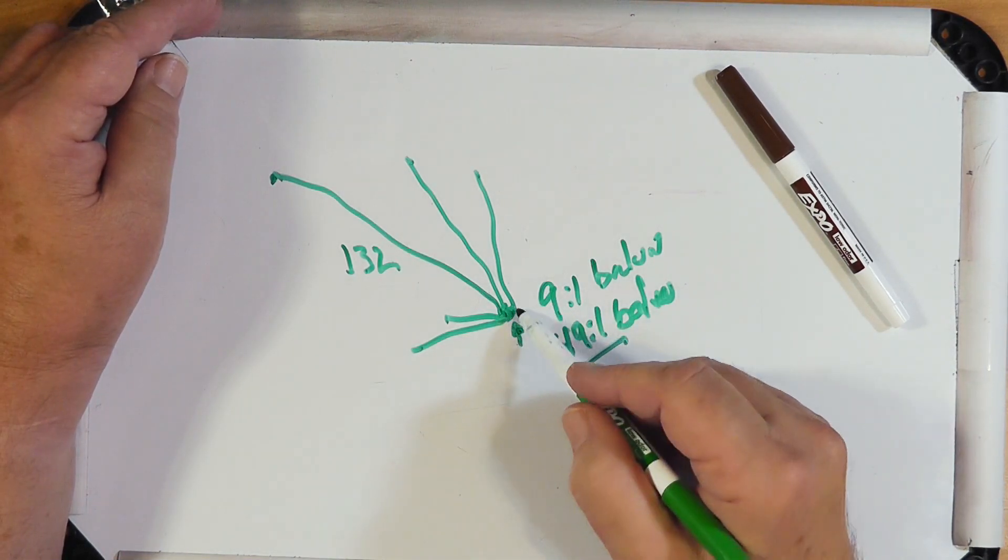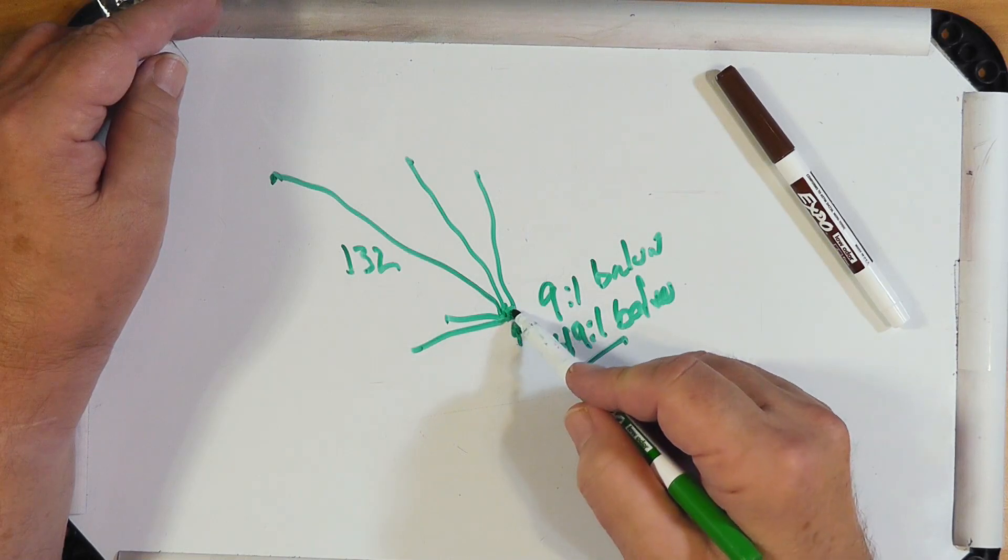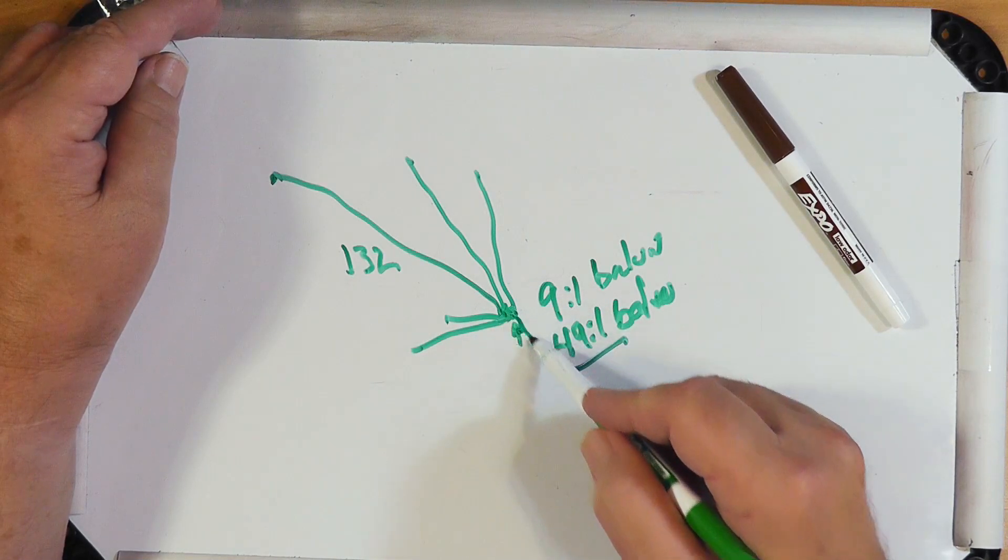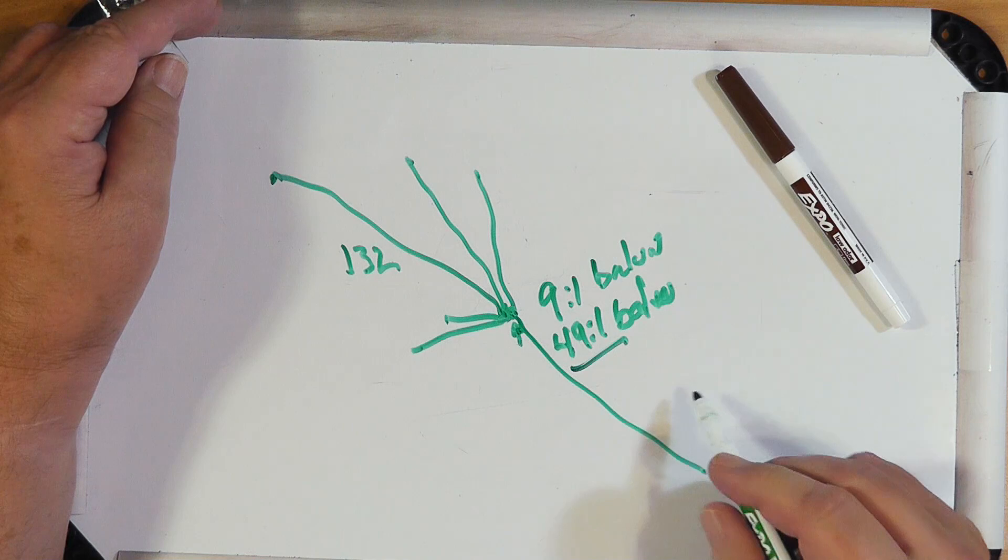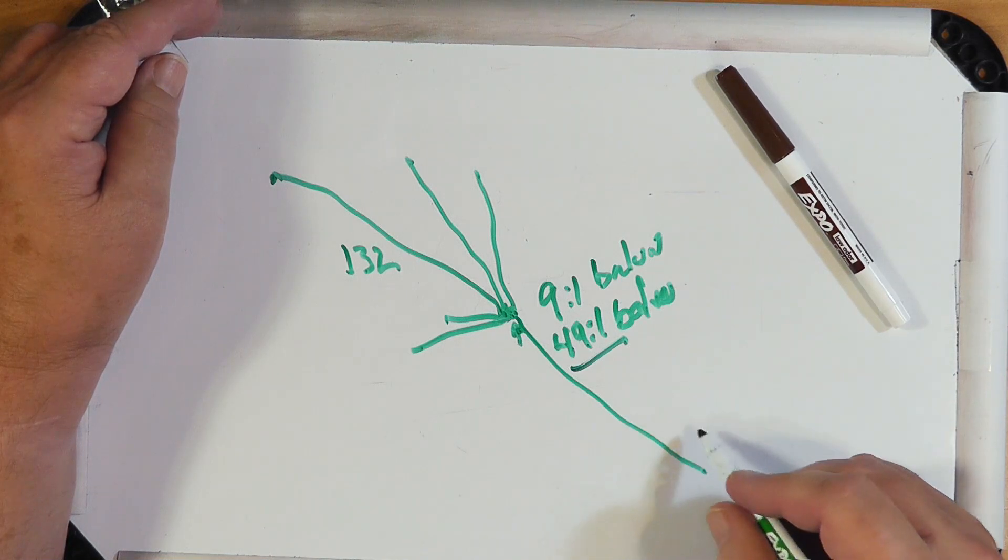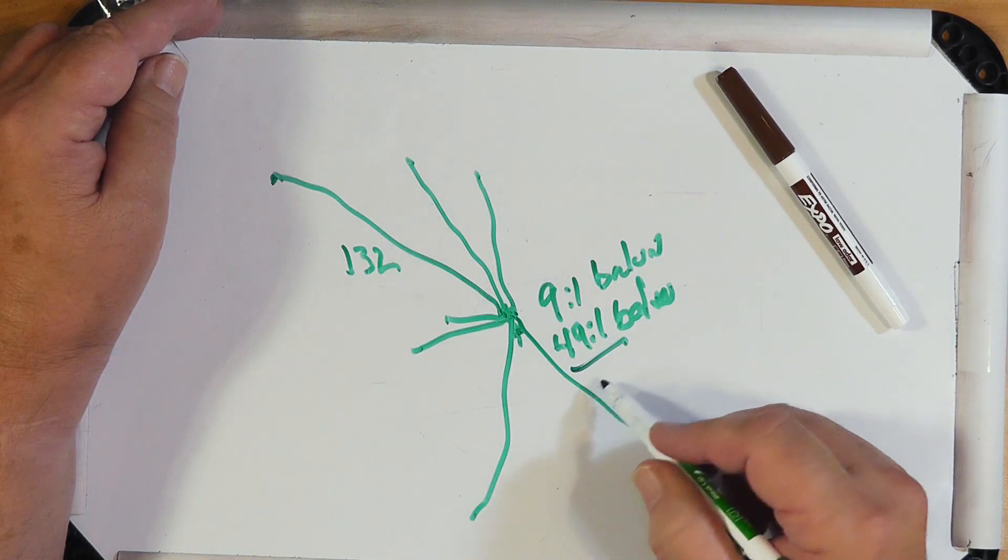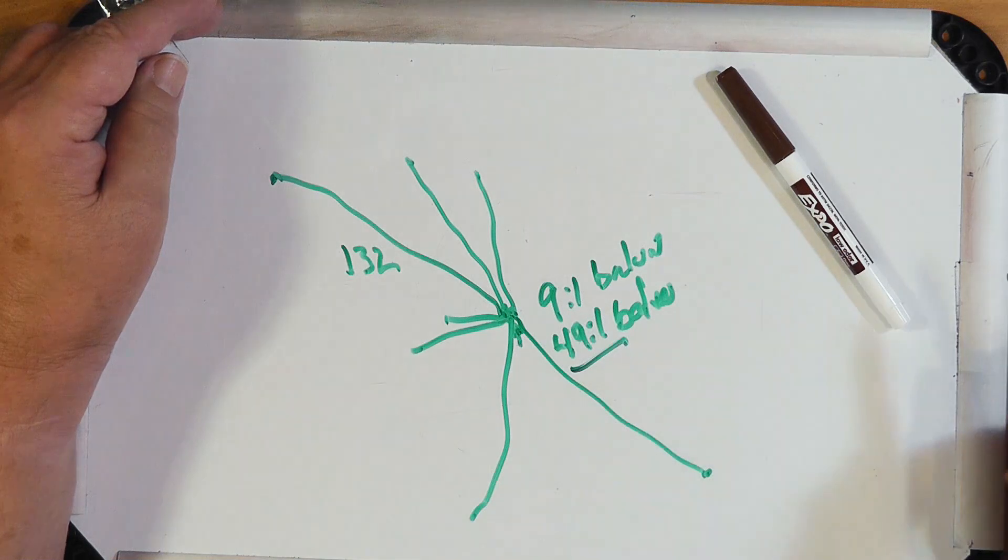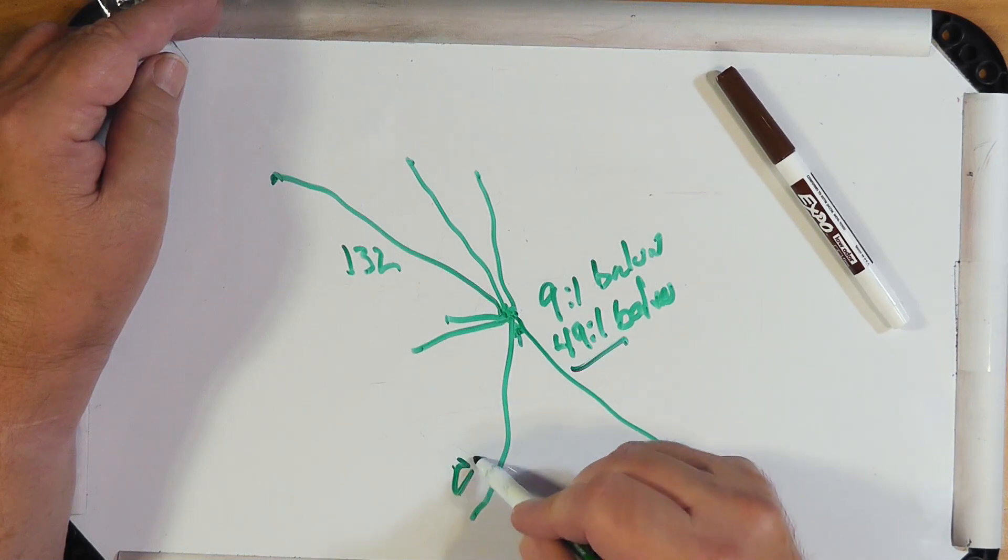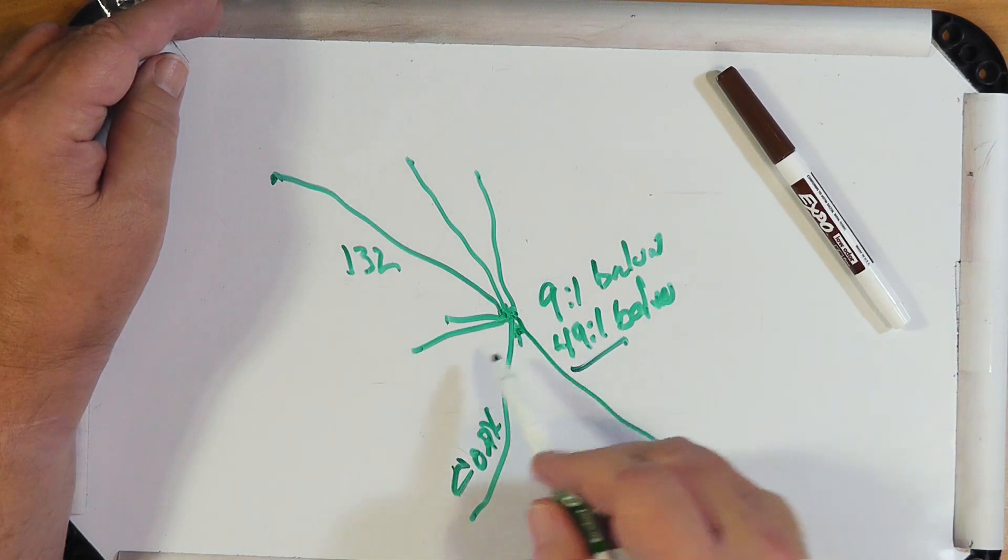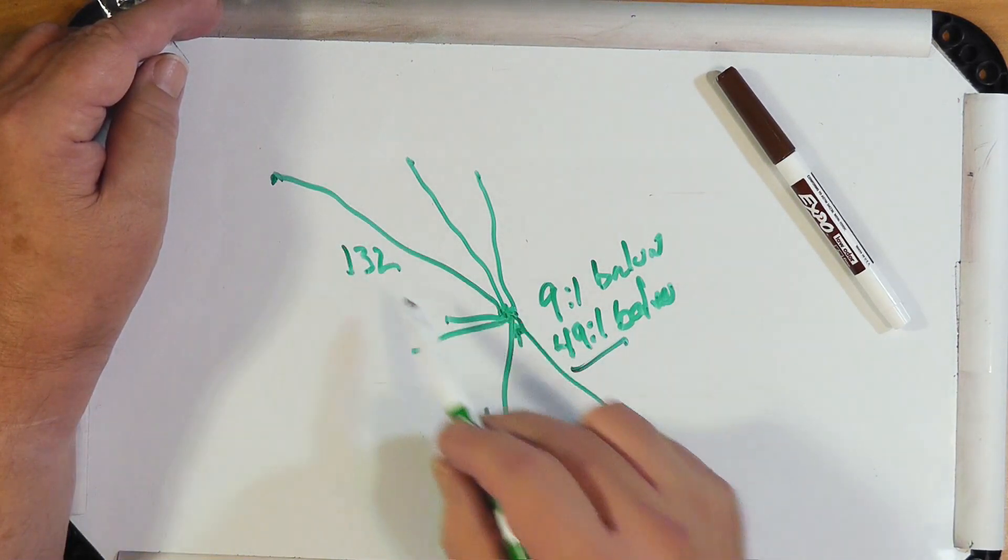And then, he wants to put a counterpoise here that's a quarter wave for whatever, and then run the coax from that. Well, the counterpoise may or may not be necessary. You can try it without it. You can put it there if it will work. This is your coax. Okay, here are your end fed dipoles.